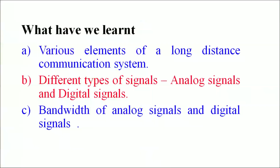In this chapter, what we have understood are the various elements used in a long distance communication system. We talked about different types of signals, especially details of analog and digital signals, and we discussed the bandwidth of analog signals commonly used and some digital signals. Thank you, learners.